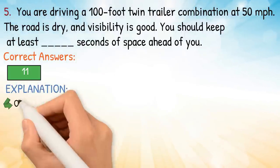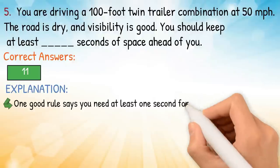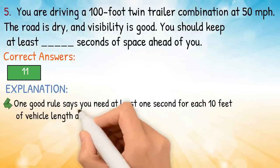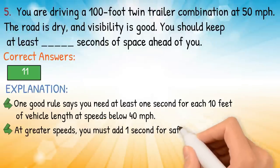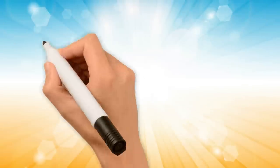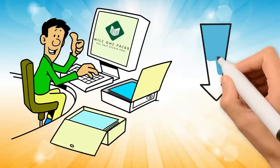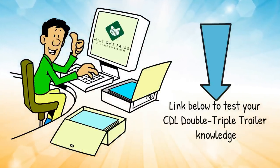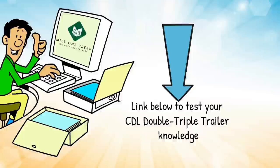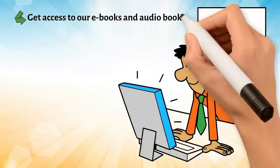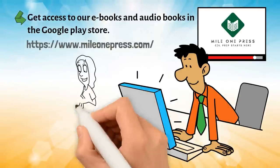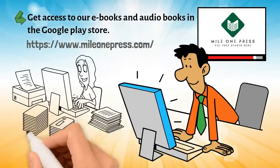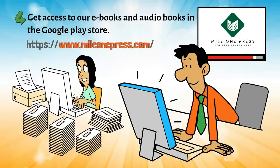Explanation: one good rule says you need at least one second for each 10 feet of vehicle length at speeds below 40 miles per hour. At greater speeds, you must add one second for safety. Feel free to take a free sample test in the link below. Get access to our ebooks and audiobooks in the Google Play Store. Find more CDL practice tests at mileonepress.com. Thanks for watching.